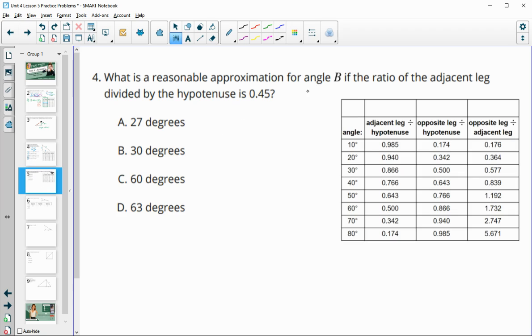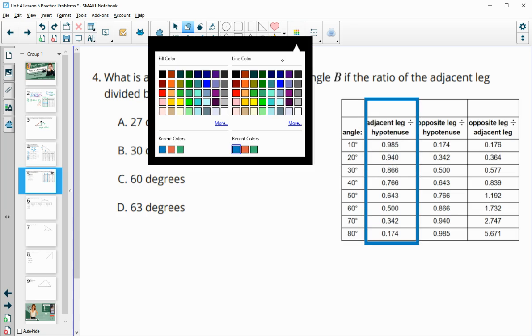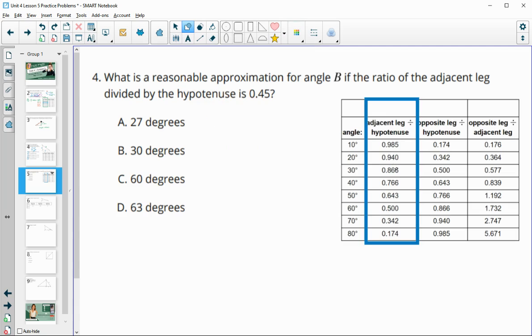Number four, what's a reasonable approximation for angle B if the ratio of the adjacent to the hypotenuse is 0.45? So we're going to look in the adjacent hypotenuse category, and we're looking for close to 0.45. 0.45 is here between 0.34 and 0.5. So it's going to be bigger than 60 degrees and less than 70, so that leaves us here at 63 degrees.